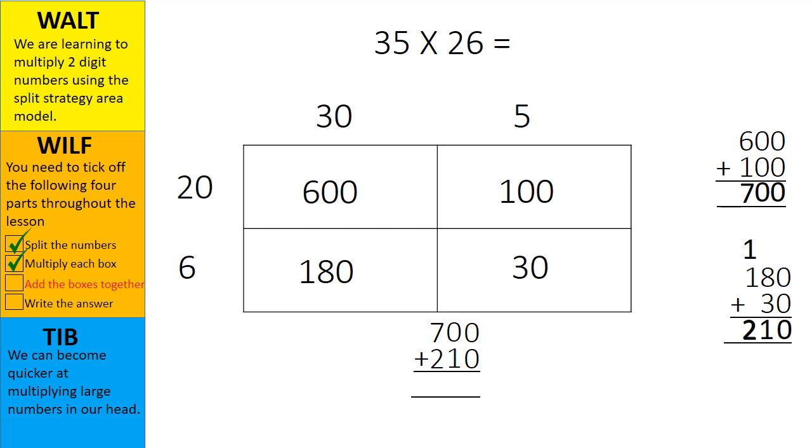The final steps will require us to add the answer from the top two boxes with the answer from the bottom two boxes. 700 plus 210. I will again start in the ones place with 0 plus 0. This equals 0. I will then add the tens place. 0 tens plus 1 ten. This equals 1 ten.